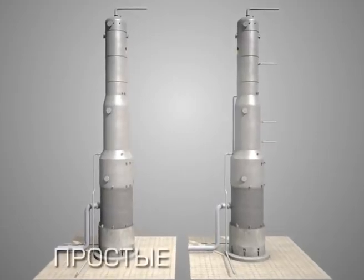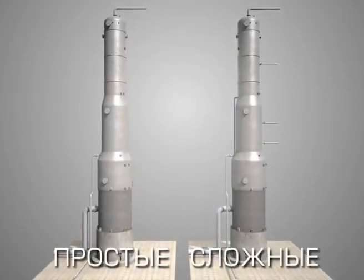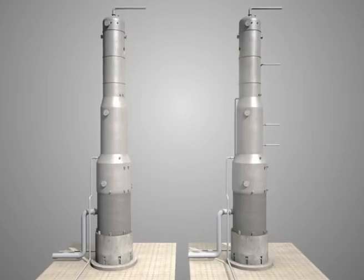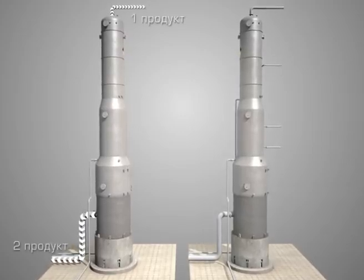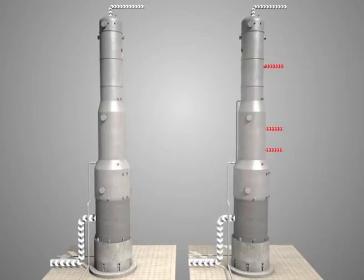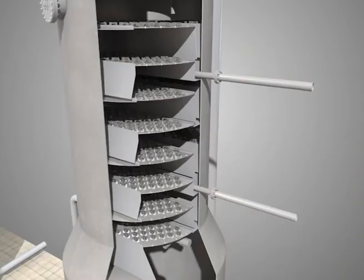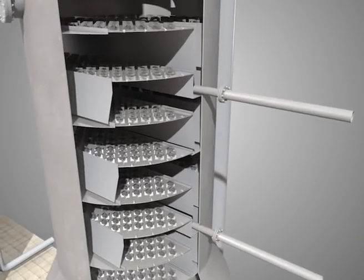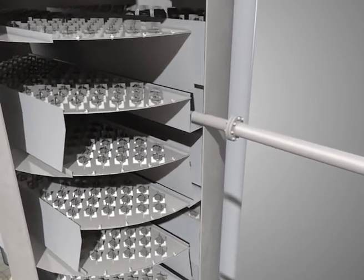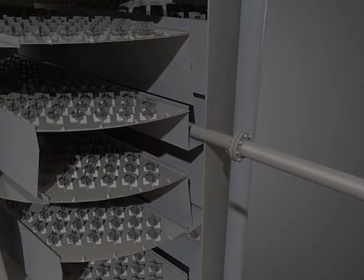The two features that should be maximized in packed beds are the open area, which is the average percent of the cross-sectional area of the column not blocked by the packing and hence available for the flow of vapor and liquid, and the surface area available for mass transfer.